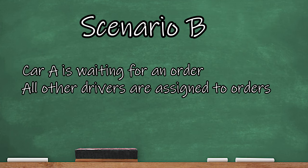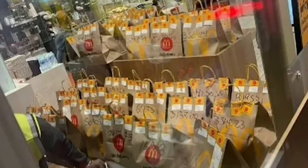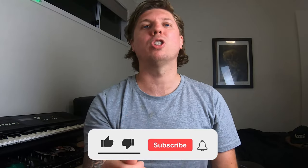Scenario B: You are the only available driver in the queue — everyone else is busy on other jobs — and you are not in the hotspot. In this scenario, because you are the only available driver to receive an order, you'll get offered the order regardless of whether you're in the hotspot or not. The order needs to be offered to someone. So in this case, you don't need to be in the hotspot to receive an order.